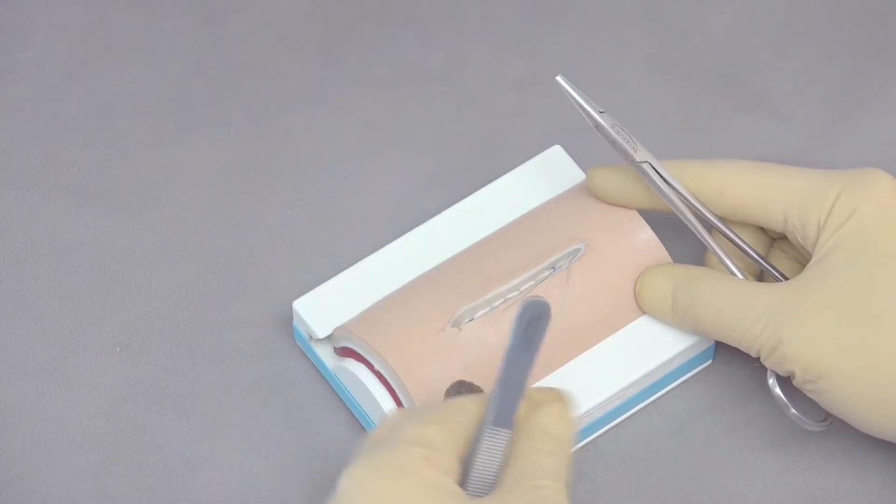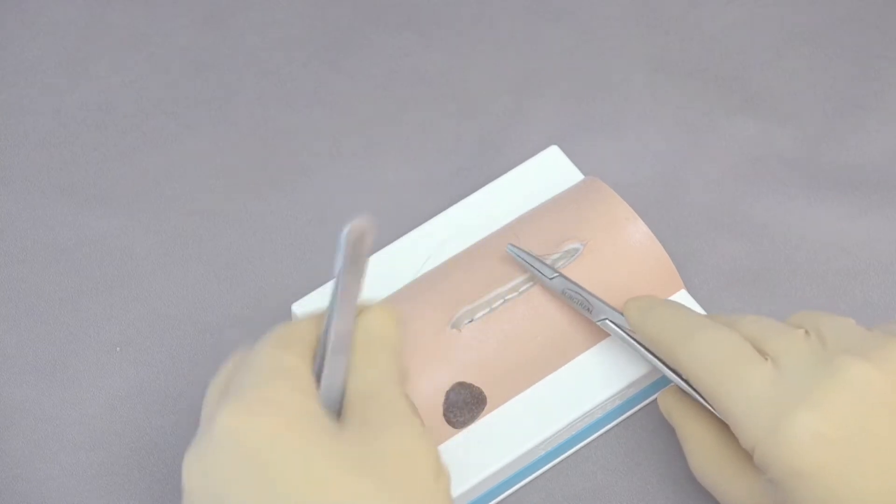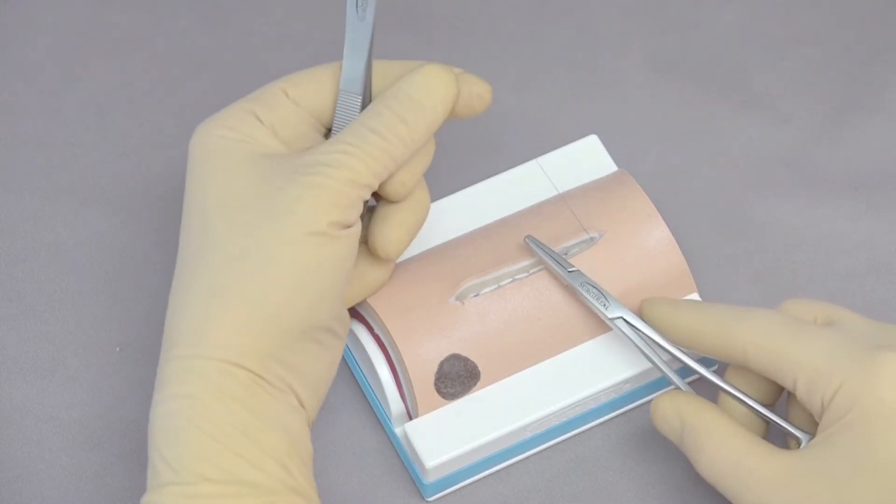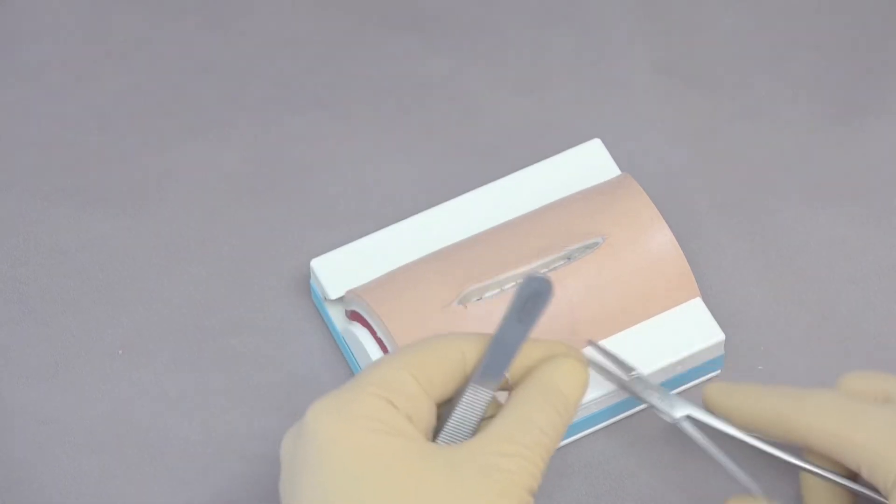When you're burying a knot, the whole concept of burying a knot is to start your needle and finish your needle where you want the suture to end up or the knot to end up. So in this case everything is deep.